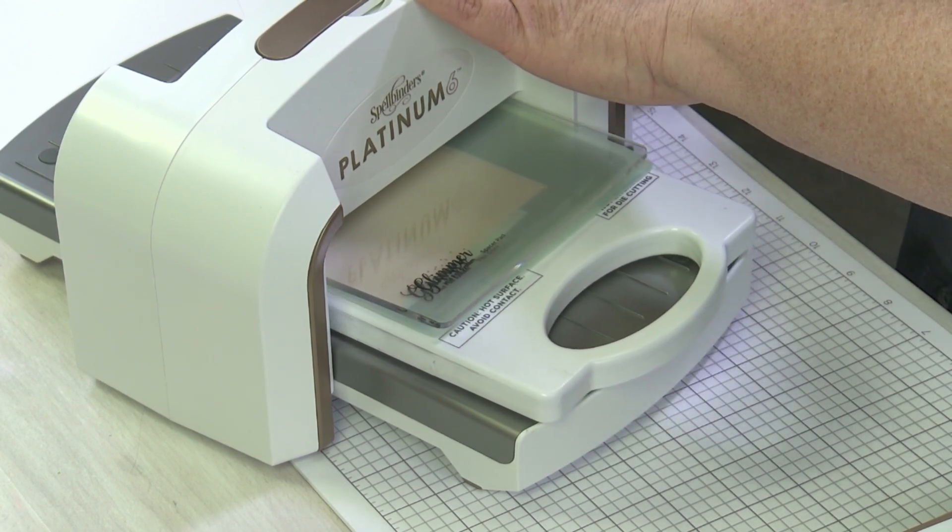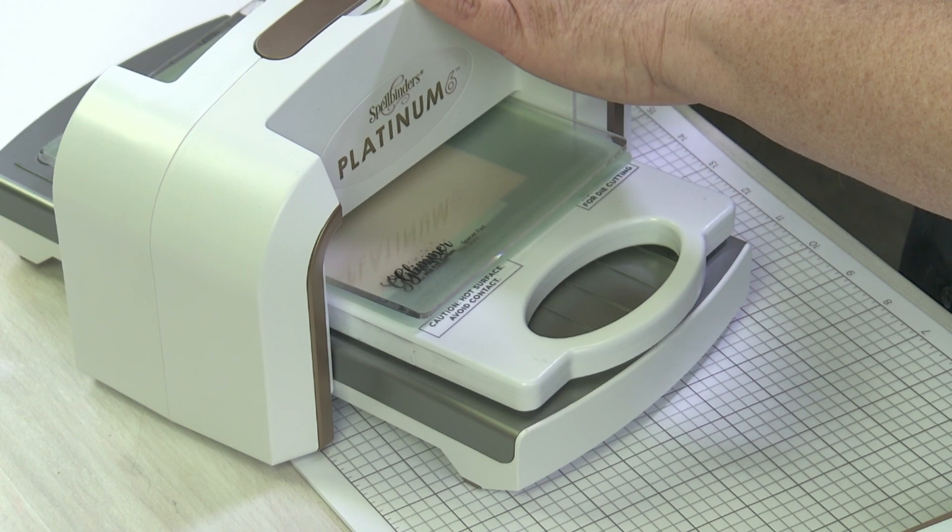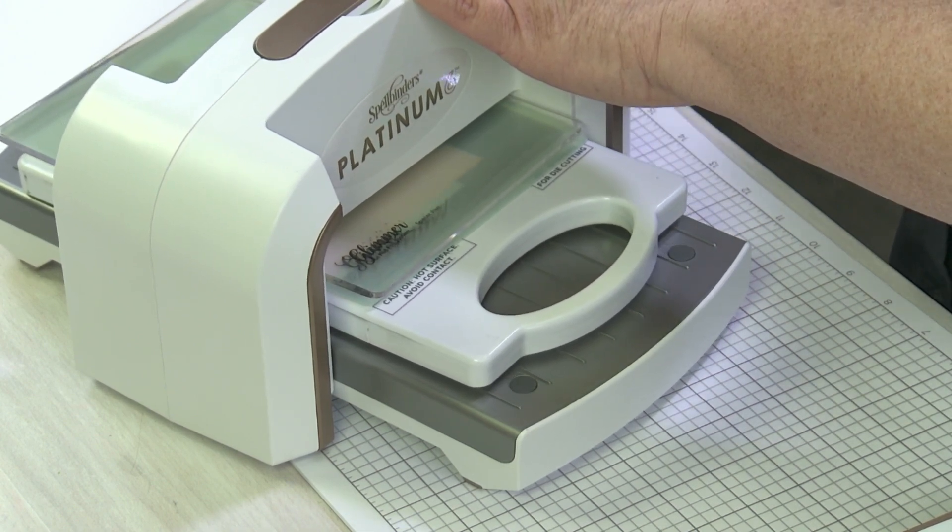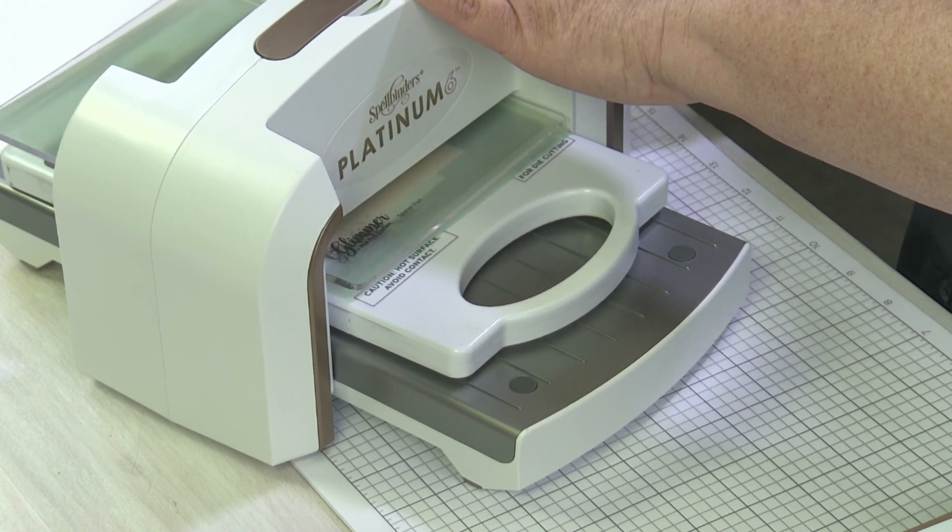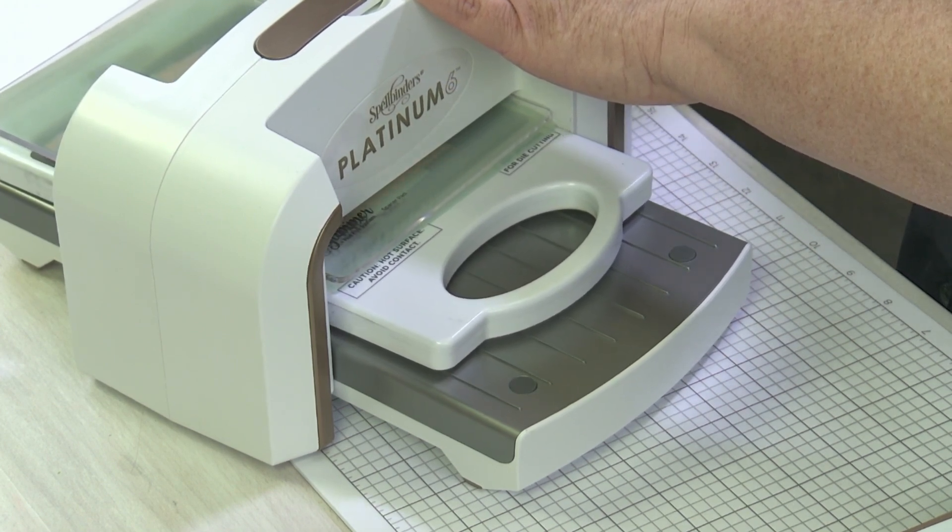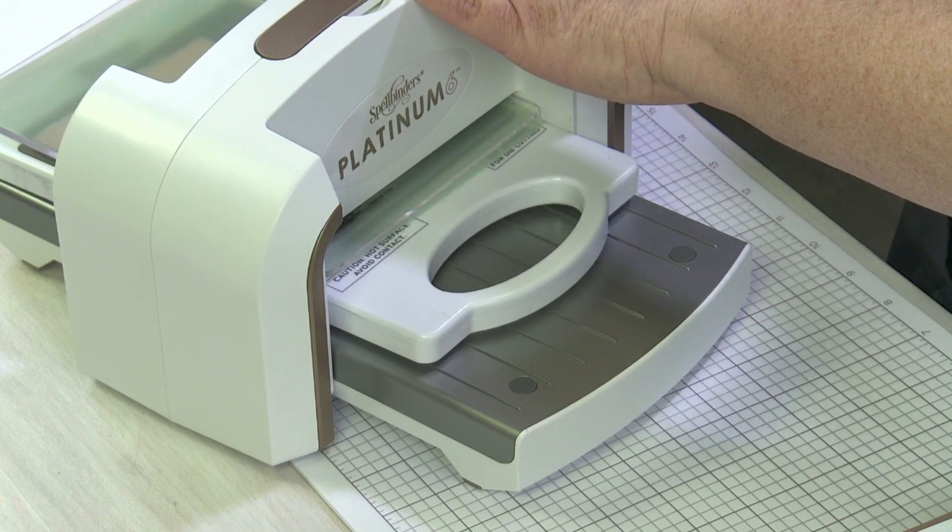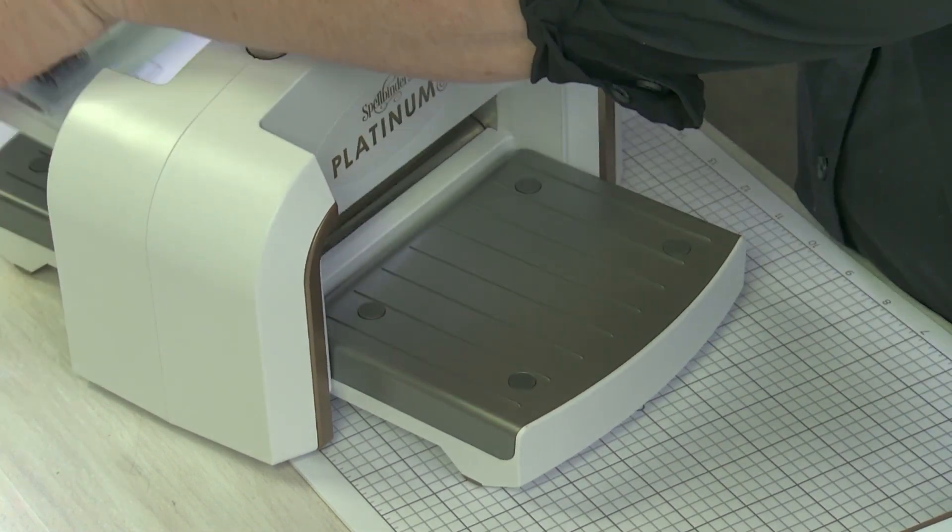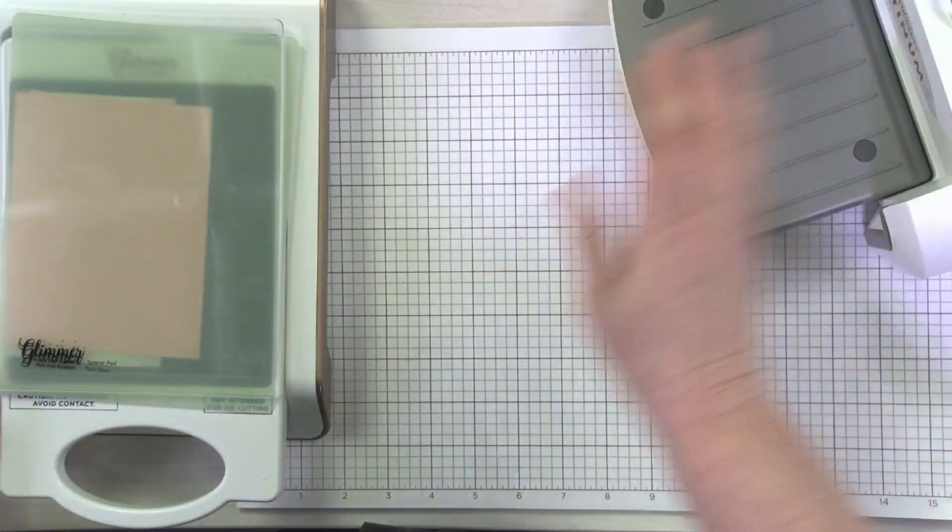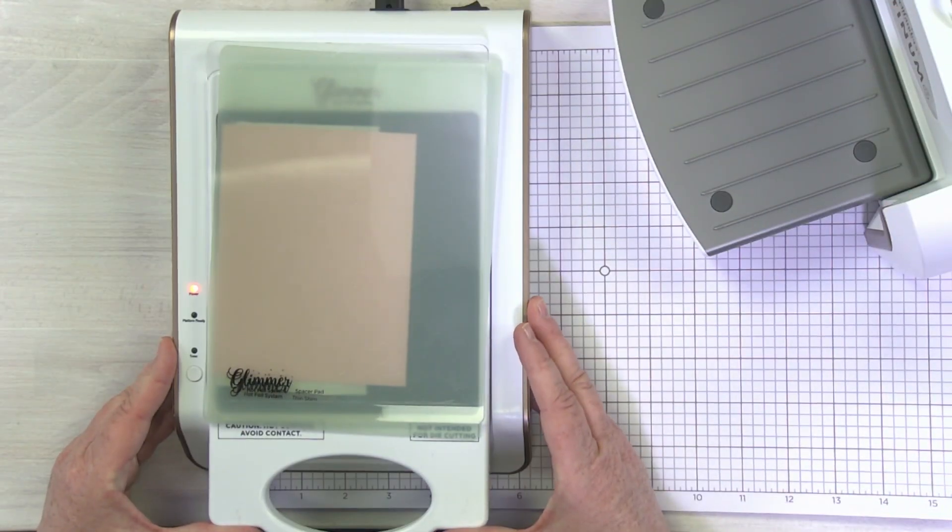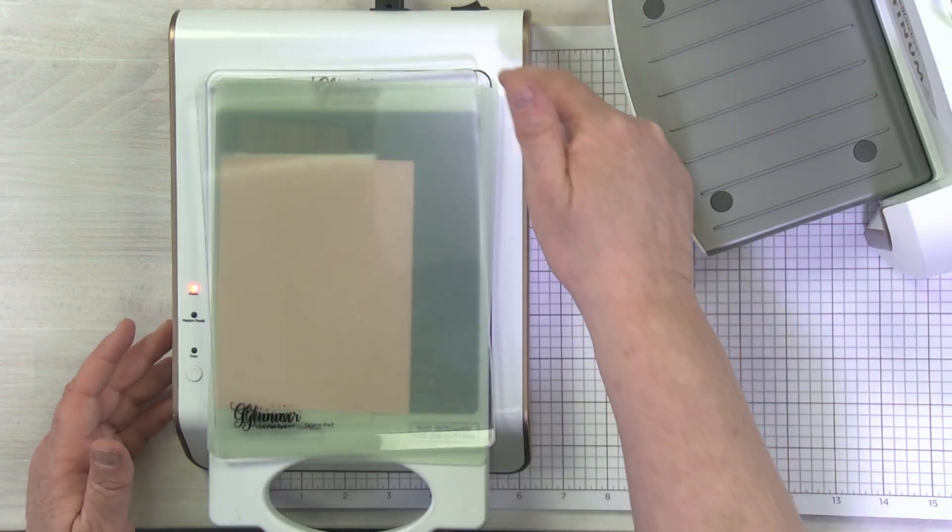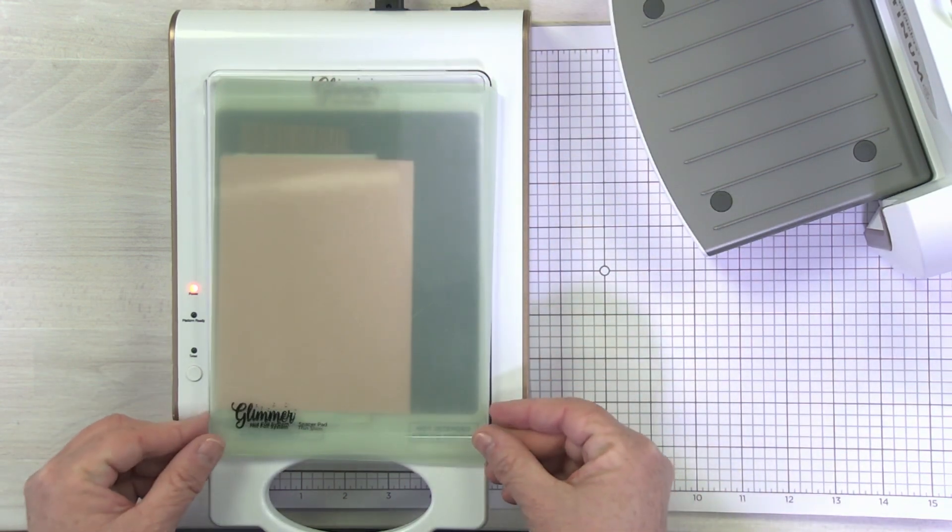Now I'm going to just crank my die cutting machine very slowly. Definitely want to emphasize that you're going to want to roll it through nice and slow. This is allowing that glimmer plate to react with that foil, activate, really let the heat press that foil into my cardstock. When I have all these pieces still together, I just automatically come back and dock my platform again.